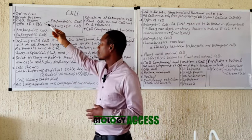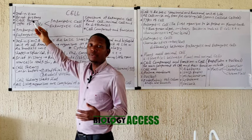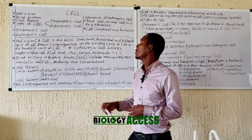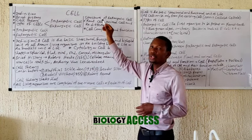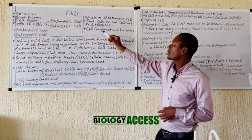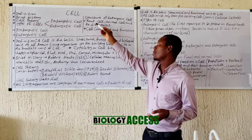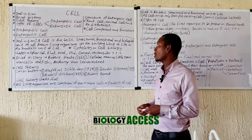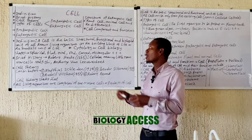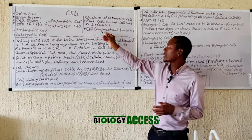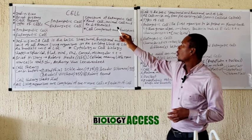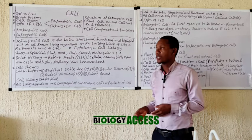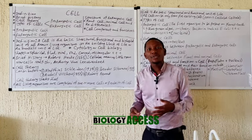We'll discuss a very brief history, the cell theory, and the types of cell — which are the prokaryotic and the eukaryotic cell. We'll discuss the structure of the eukaryotic cell, including the plant cell and the animal cell, and the differences between them. Finally, we'll cover the cell components and their functions.